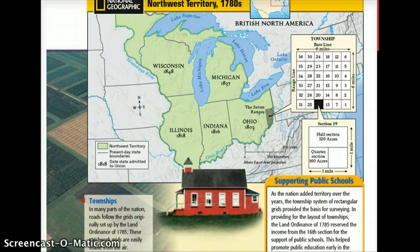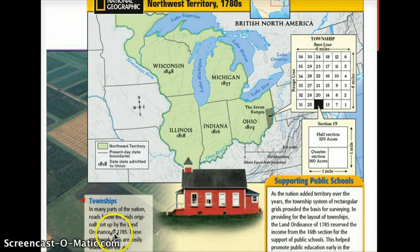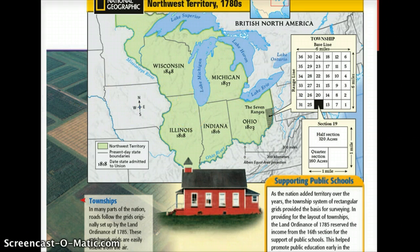Basically, what the revised plan did was take an area of land, divide it into parcels, and then as different territories were added, people could come into these patchwork grids — as they were called — and were given certain parcels that they had to pay for. You can even see them from the air, which is kind of cool.